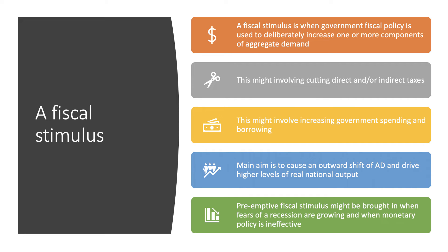Our third example is a fiscal stimulus — when a government uses fiscal policy changes in government spending and taxation to deliberately increase one or more components of aggregate demand. They might cut income tax, cut VAT, or increase spending on public services, expanding the fiscal deficit. The main aim is to cause an outward shift of demand to expand output. A preemptive fiscal stimulus might be used when there are fears of recession and when monetary policy is perceived to be ineffective — when low interest rates aren't increasing demand.